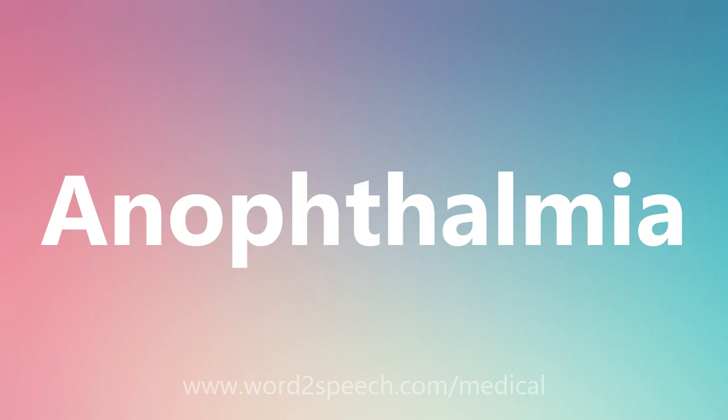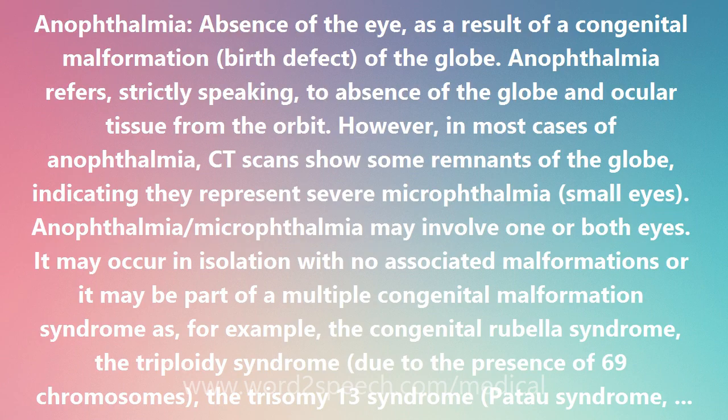Anophthalmia: absence of the eye as a result of a congenital malformation, or birth defect, of the globe. Anophthalmia refers, strictly speaking, to absence of the globe and ocular tissue from the orbit. However, in most cases of anophthalmia, CT scans show some remnants of the globe, indicating they represent severe microphthalmia — small eyes.